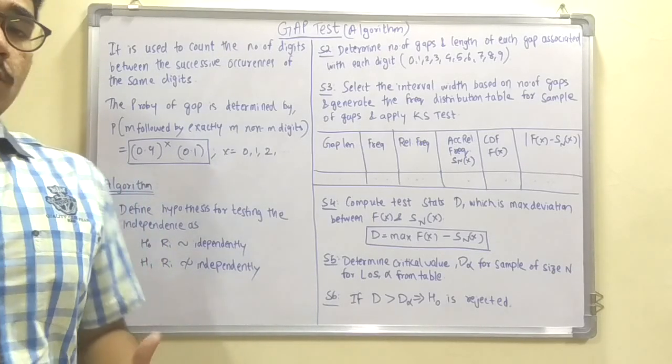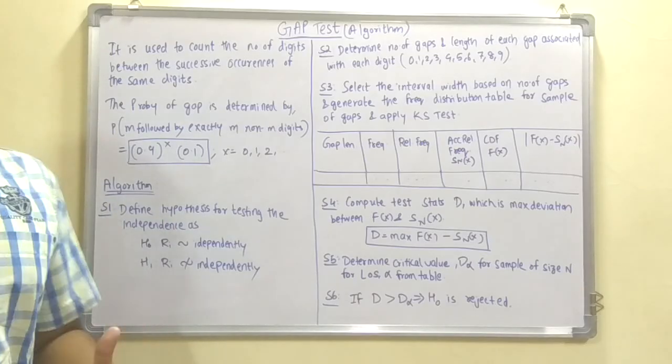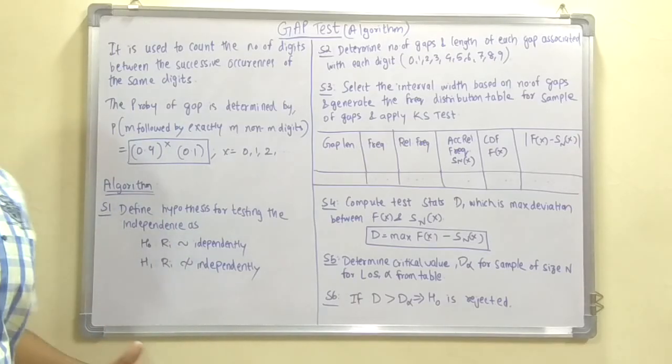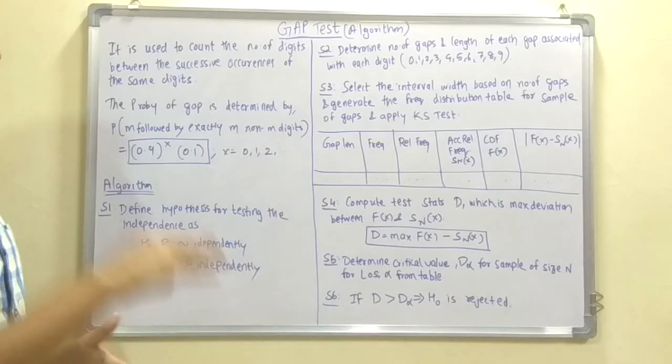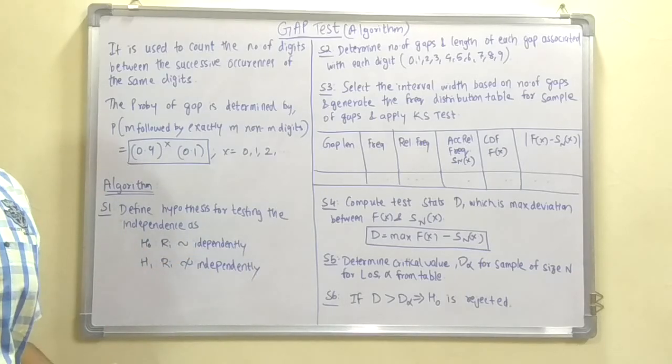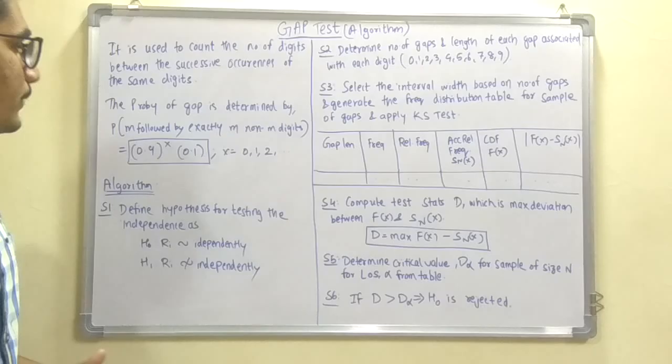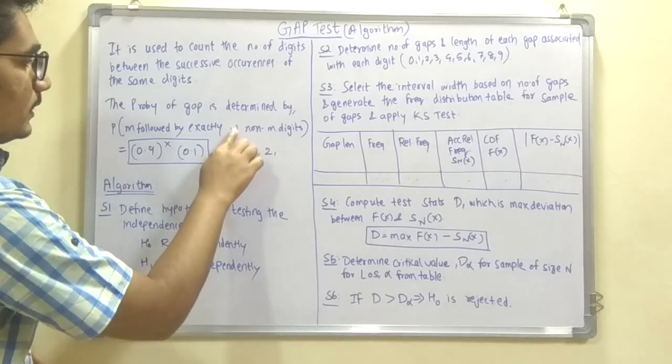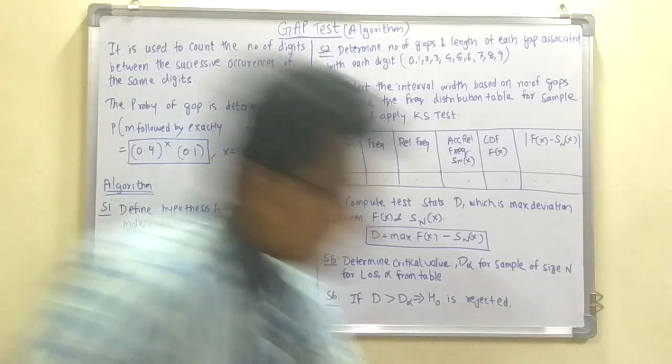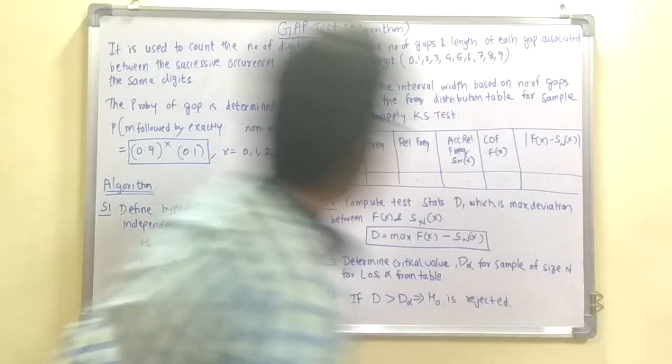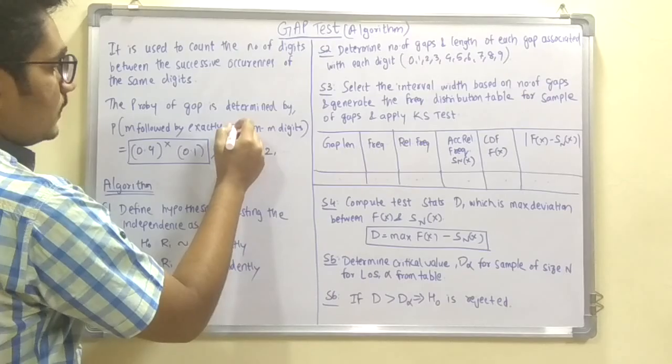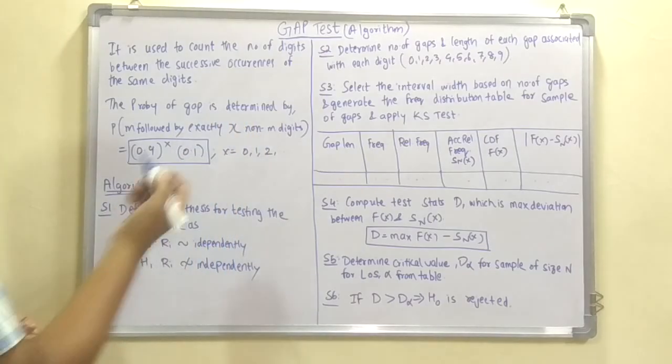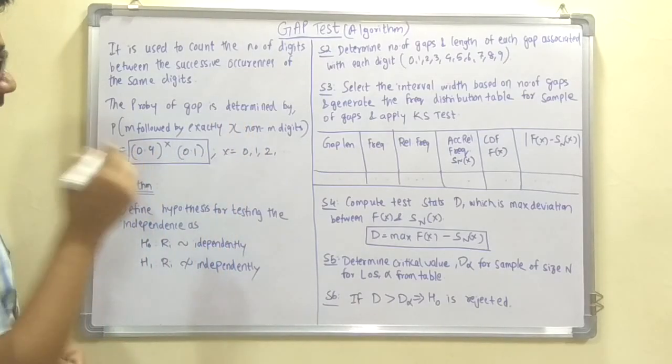While calculating, you determine the probability of that particular gap, which is determined by how many digits that particular same digit repeats. So the probability of M followed by exactly X non-M digits is 0.9 raised to X multiplied by 0.1, and the value of X can go from 0, 1, up till infinite.